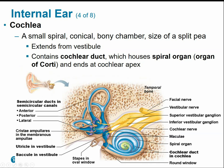The cochlea is a small spiral bony chamber in the inner ear, about the size of a pea. It extends from the vestibule off the saccule and contains the cochlear duct and the spiral organ — also called the organ of Corti — which is our actual sensory receptor, wrapping around the cochlear duct.